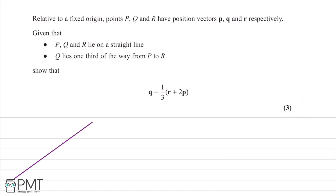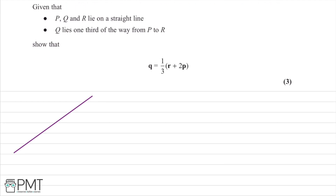This question is worth three marks. We can see we have a straight line, so we're going to annotate this to help us understand and plan a solution. We know P, Q and R lie on a straight line, so we put in P and R. Q lies one third of the way from P to R, so we annotate that point in. This diagram isn't to scale, but it helps us understand what's going on.